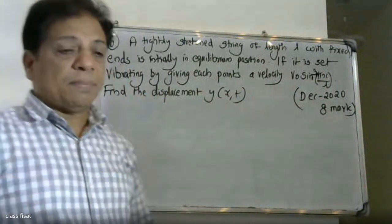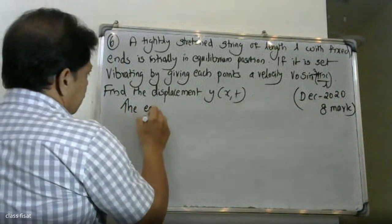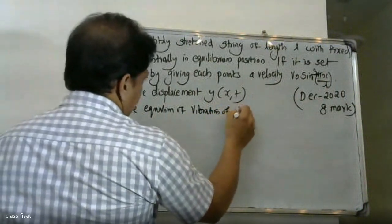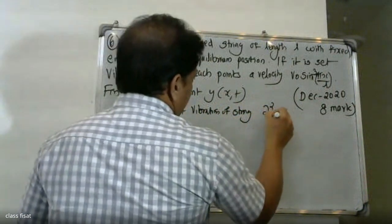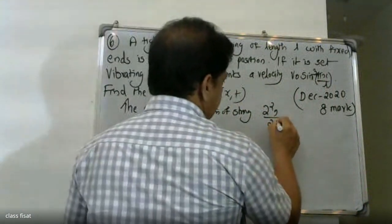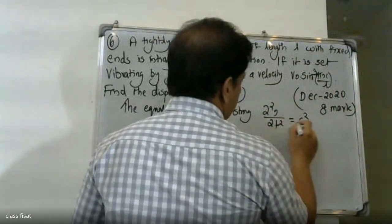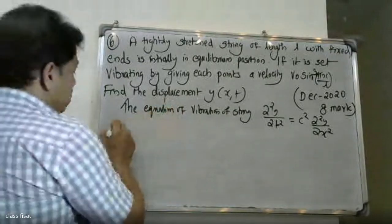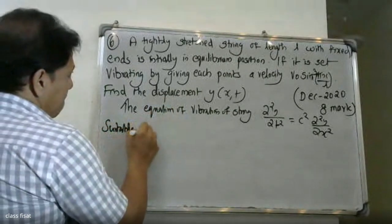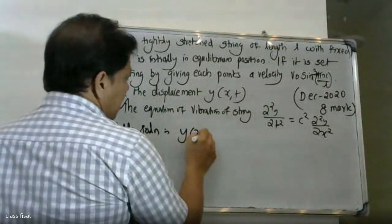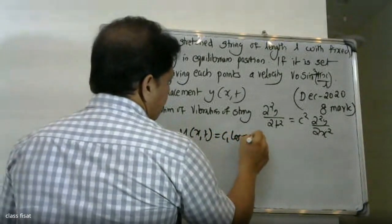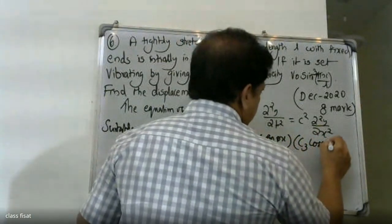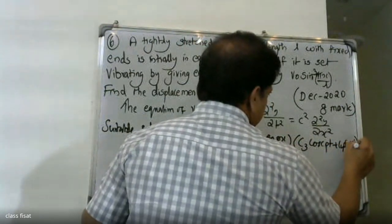The equation of vibration of state is ∂²y/∂t² = c²·∂²y/∂x². The most suitable solution is y(x,t) = (c1·cos(px) + c2·sin(px))(c3·cos(pt) + c4·sin(cpt)). This is equation A.